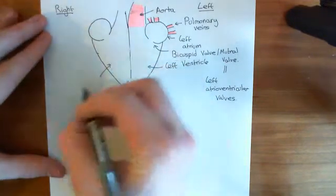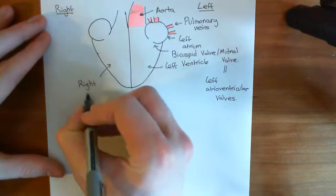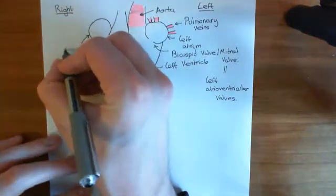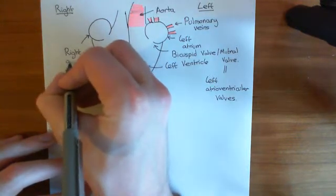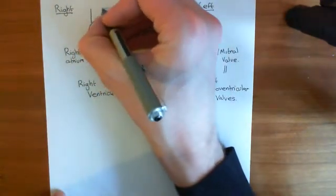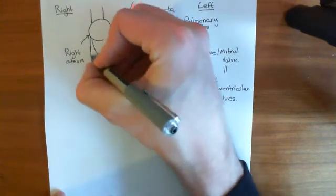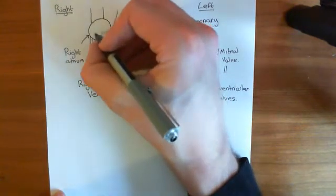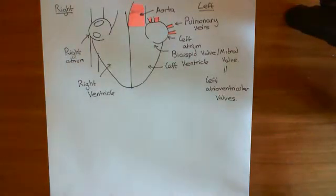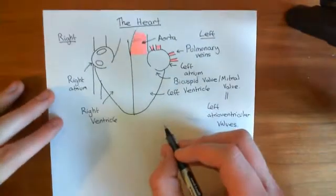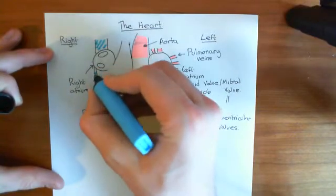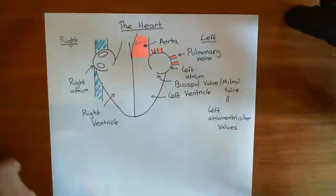Here again we have the right ventricle. The chamber feeding into the right ventricle is the right atrium. And then you have massive great venous blood vessels draining into the right atrium — these are the superior and inferior vena cava. Here comes the superior vena cava, and the inferior vena cava is implied to be going in below. The superior vena cava drains the upper portions of the body, and the inferior vena cava drains the lower portions of the body.